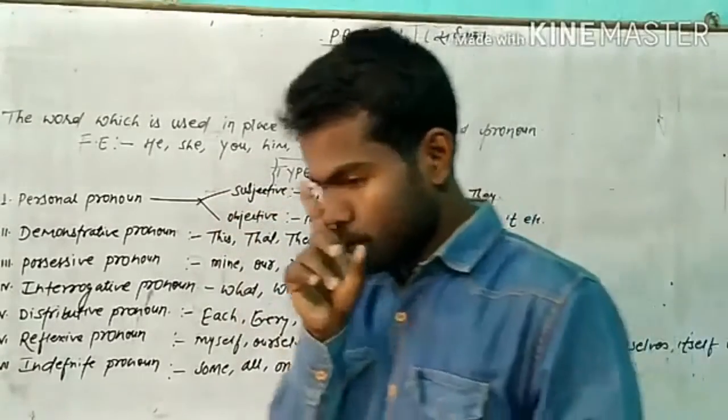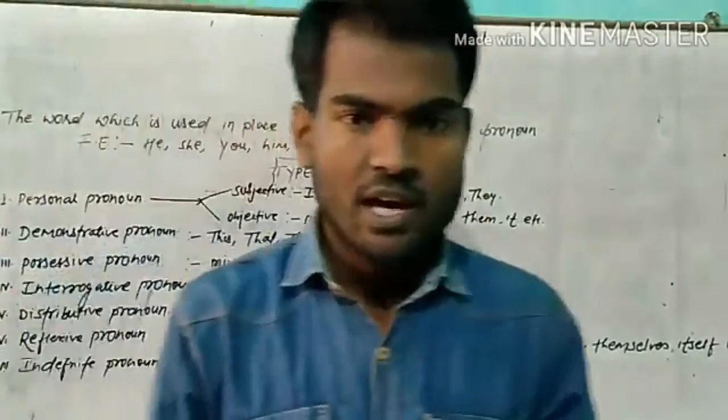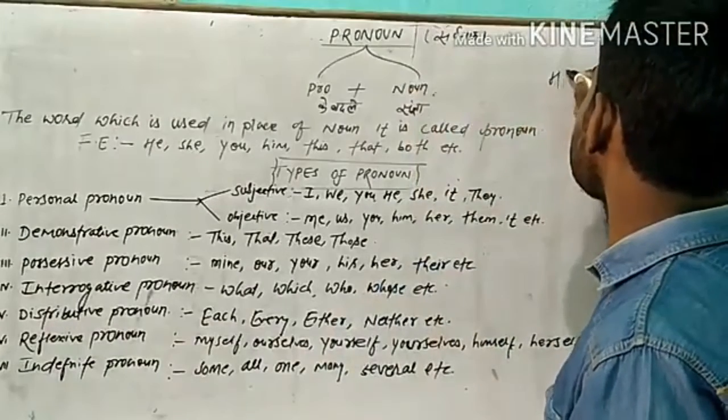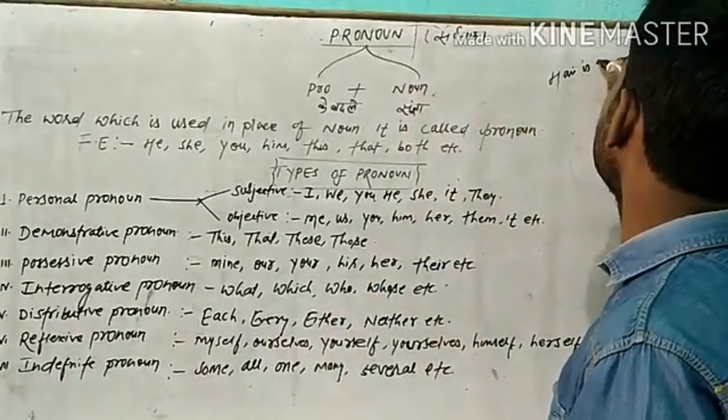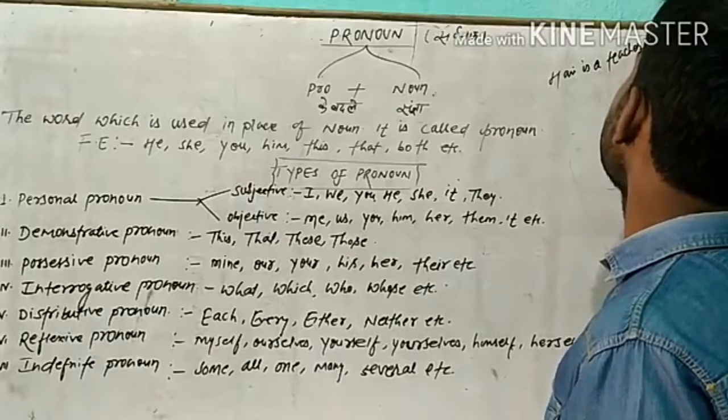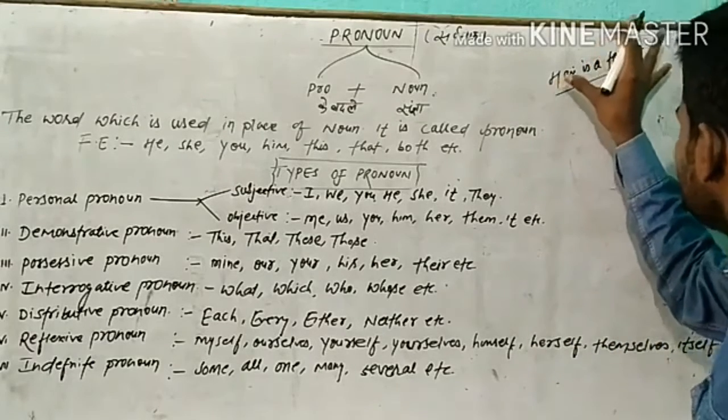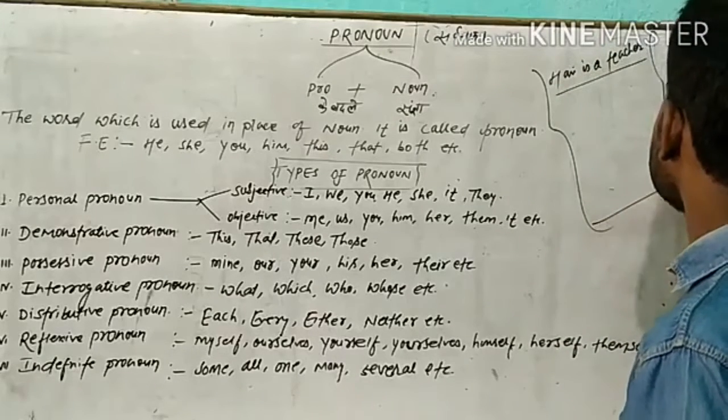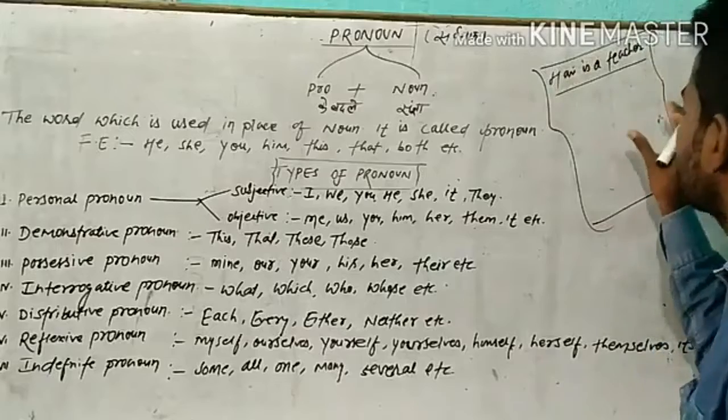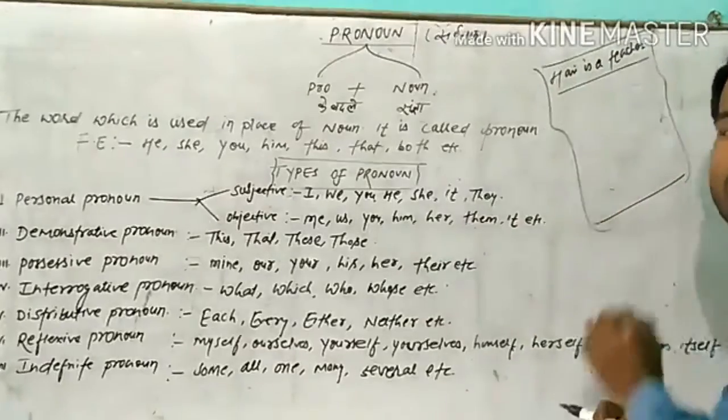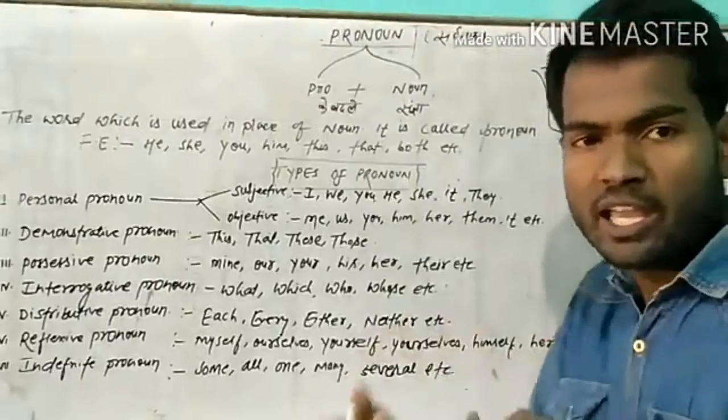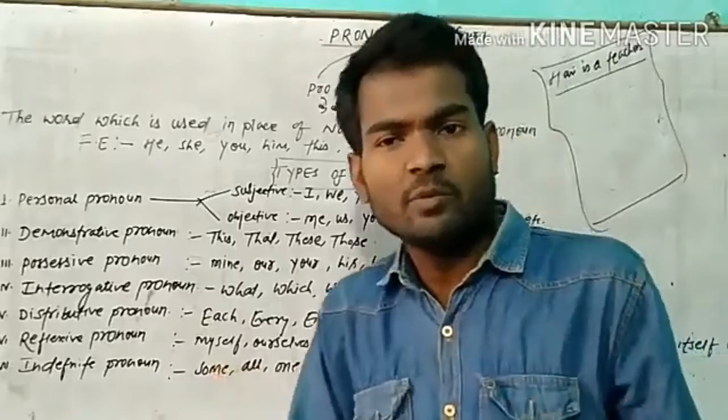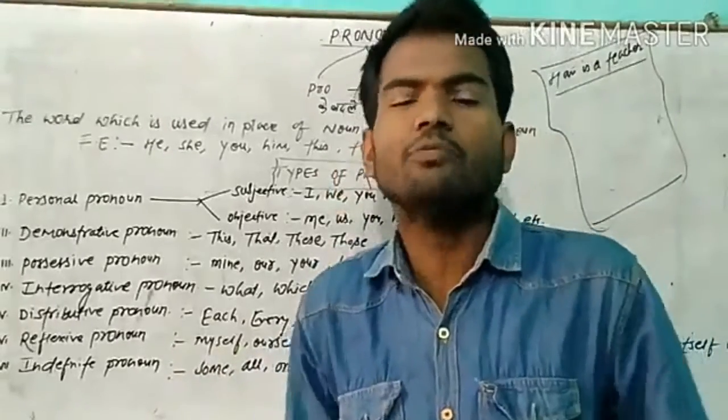Suppose I am saying a sentence. Hari is a teacher. Hari is a teacher. Okay. And if I have something about Hari, then if I use again and again Hari, Hari, Hari, Hari, then what happened, the other people who will study and then listen, they will not feel good.